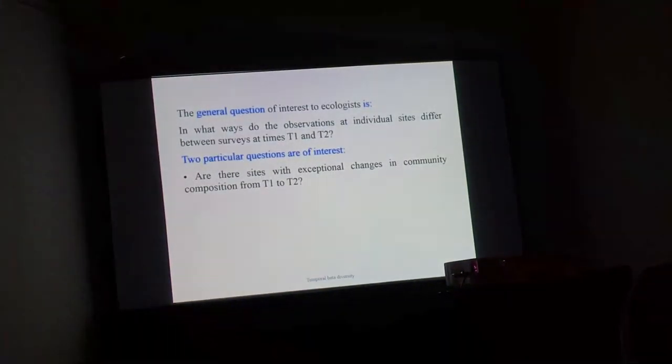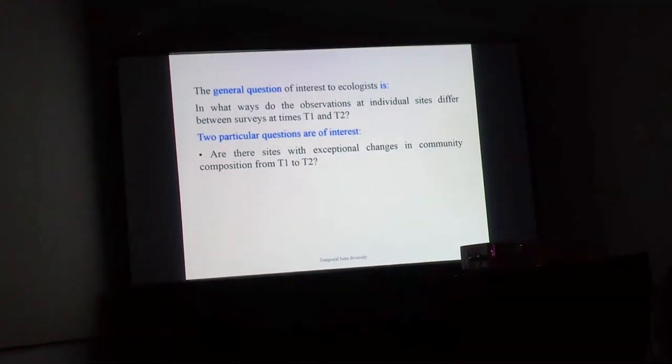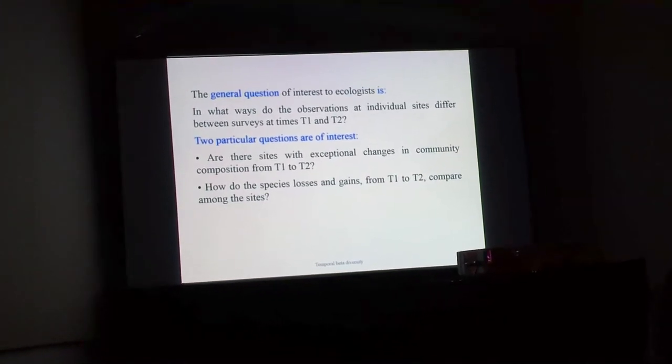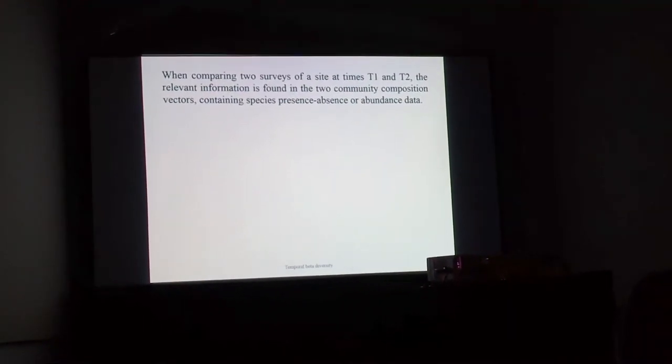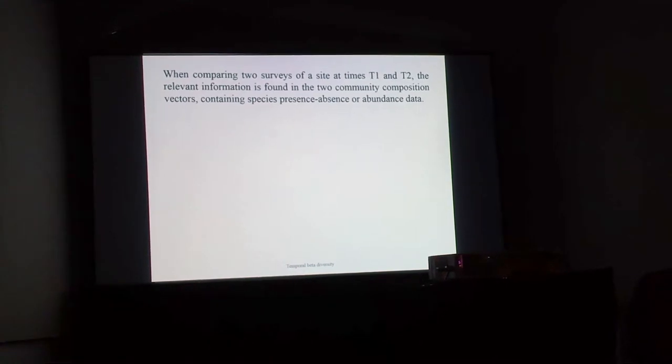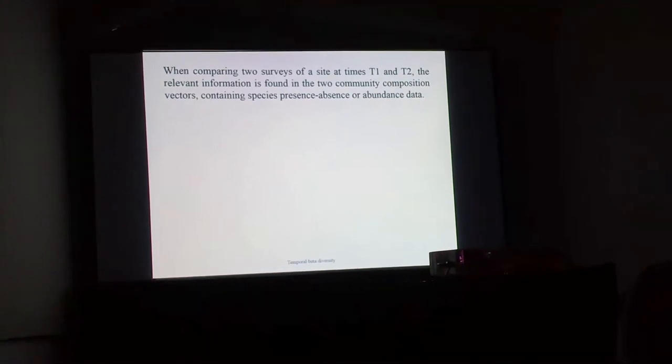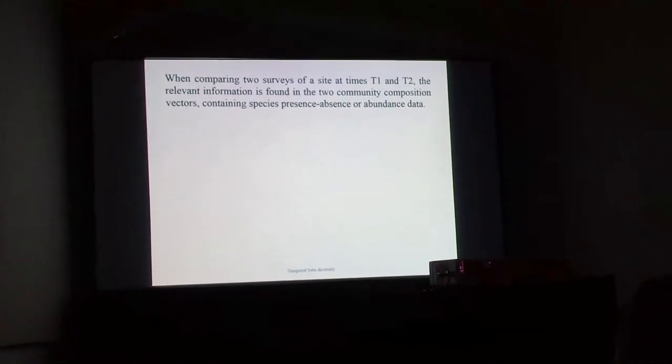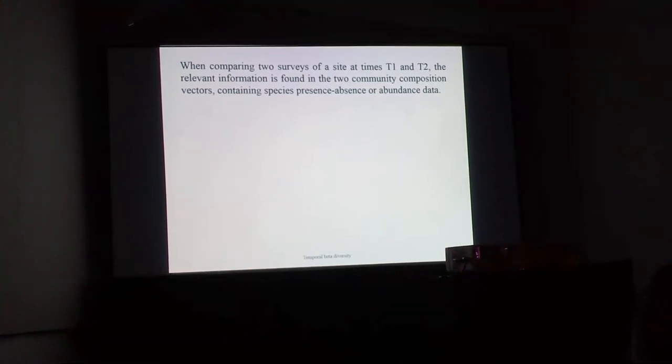Two particular sub-questions are of interest. Are there sites where the changes between T1 and T2 are exceptional in community composition? And how do the species losses and gains from T1 to T2 compare among the sites? When comparing two surveys, the relevant information is found in the two community composition vectors containing species presence-absence or abundance data. It will not be useful to compare species richness, which may be equal at the two times, yet there may have been important changes between T1 and T2.